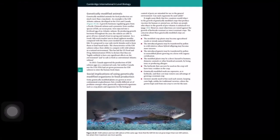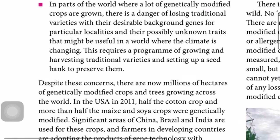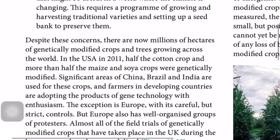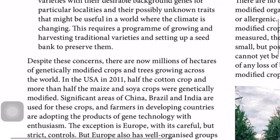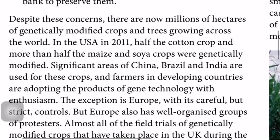In parts of the world where genetically modified crops are grown, there is a danger of losing traditional varieties with desirable background genes for particular localities, and there are possible unknown traits that might be useful in a changing climate. If the percentage of genetically modified crops and animals increases, their wild relatives will decrease because they are no longer grown commercially — possibly becoming extinct. This requires a program of growing and harvesting traditional varieties and setting up seed banks to preserve them.